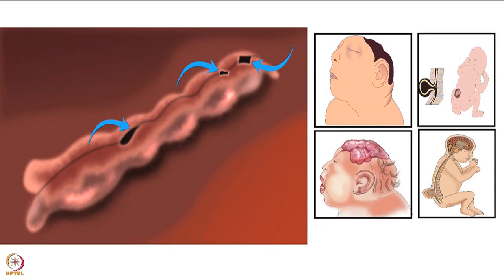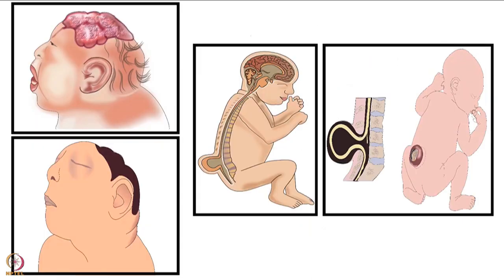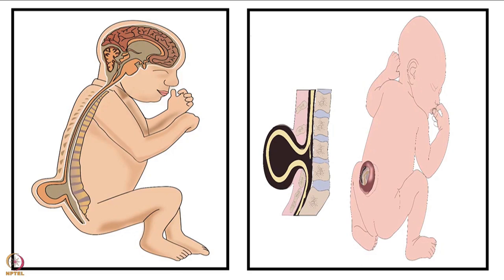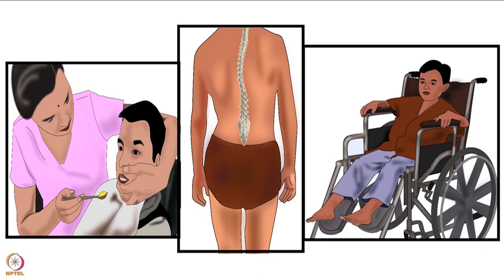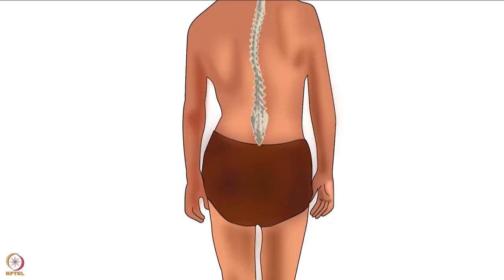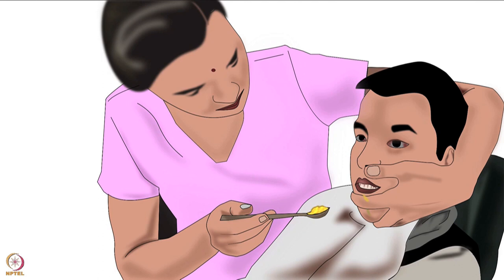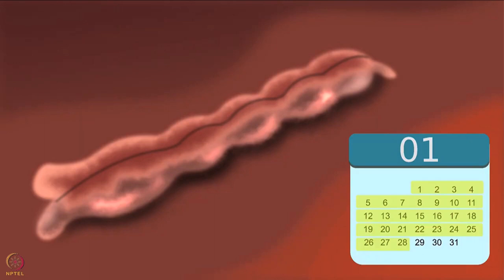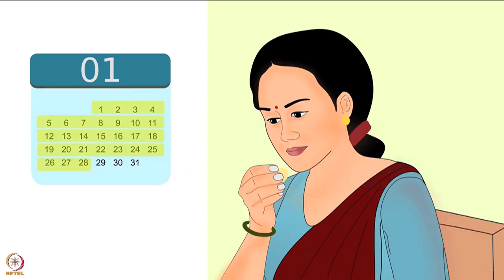Folate is also required for a healthy pregnancy and closure of the neural tube, which develops into the brain and spinal cord of the baby. Failure in closure of the neural tube may result in neural tube defects — birth defects of the brain and spinal cord. The two most common neural tube defects are anencephaly and spina bifida. In anencephaly, parts of a baby's brain and skull do not form correctly.